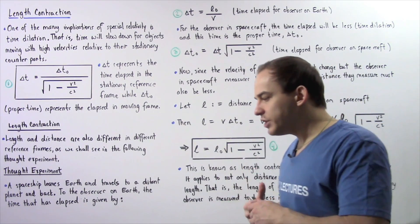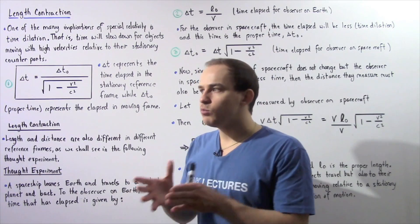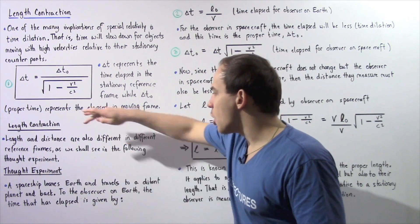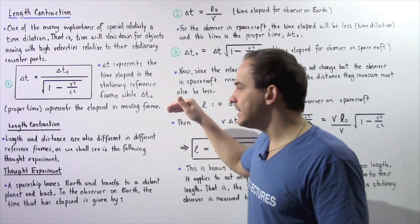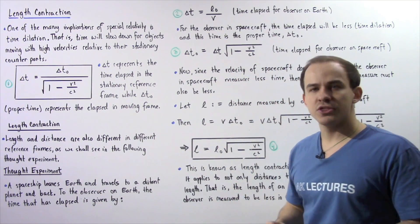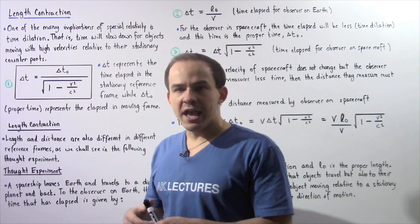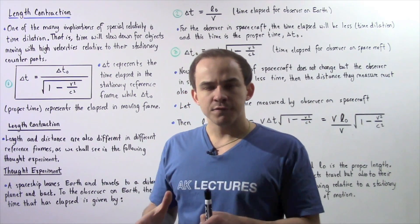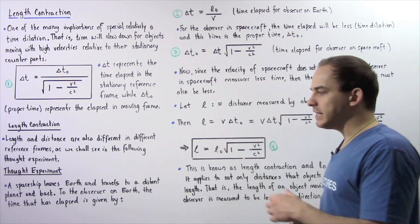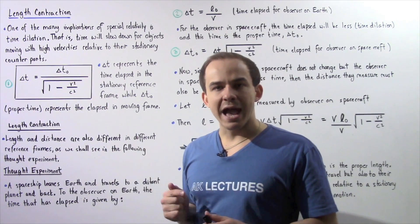Time is not the only quantity that changes when we change reference frames. Length and distance are also different in different reference frames, as we'll see in the following thought experiment. Suppose we have an observer who gets inside a spaceship, and that spaceship leaves Earth and travels to a distant planet and back.